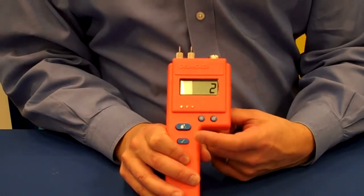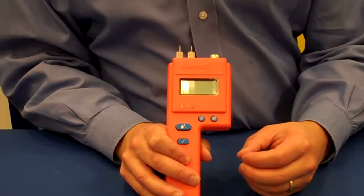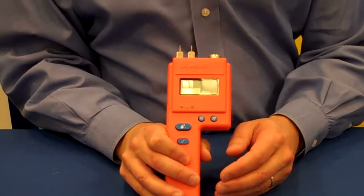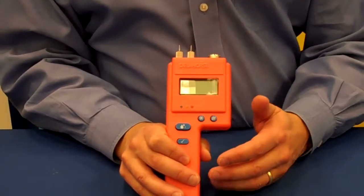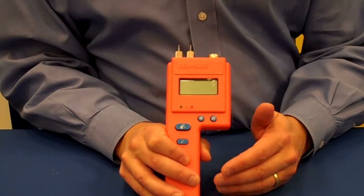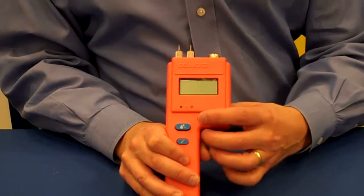Scale number two is a relative or reference scale that goes from zero to one hundred, and gives you comparative readings on materials like insulation and concrete.